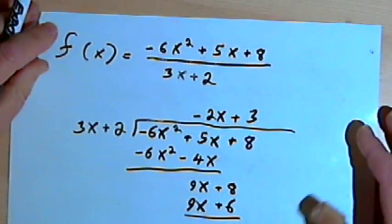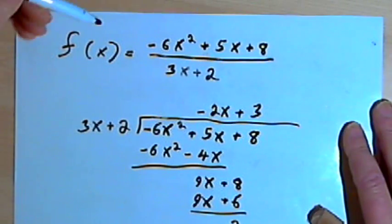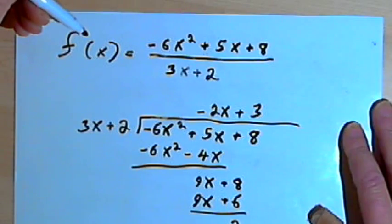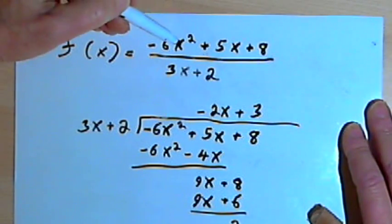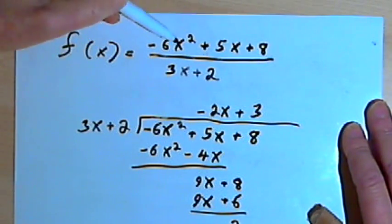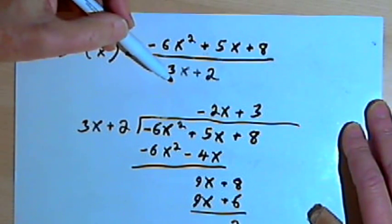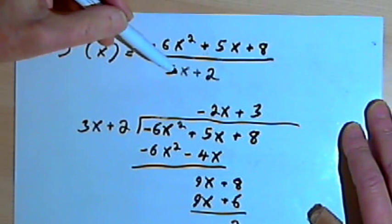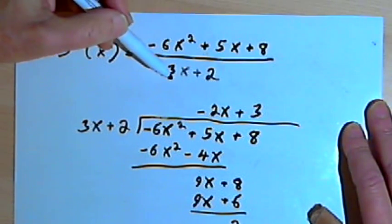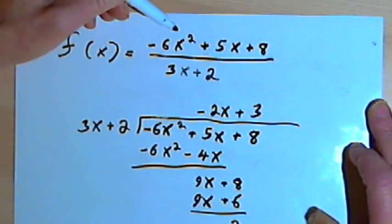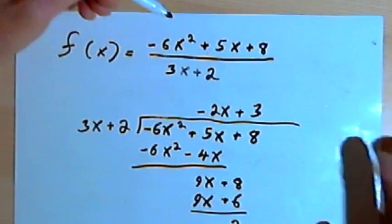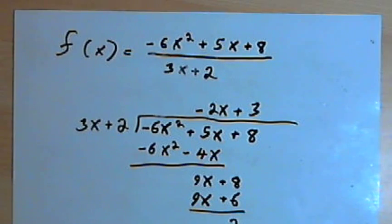Just to repeat this one more time: all you do to find the slant asymptote is divide the numerator of the rational function by the denominator, then disregard any remainder you have. That will give you the slant asymptote. Take care, I'll see you next time.